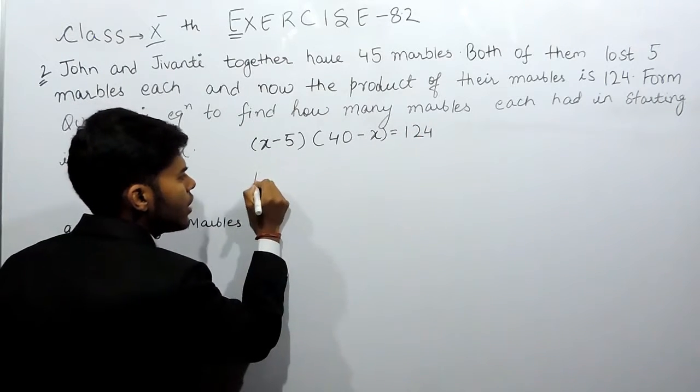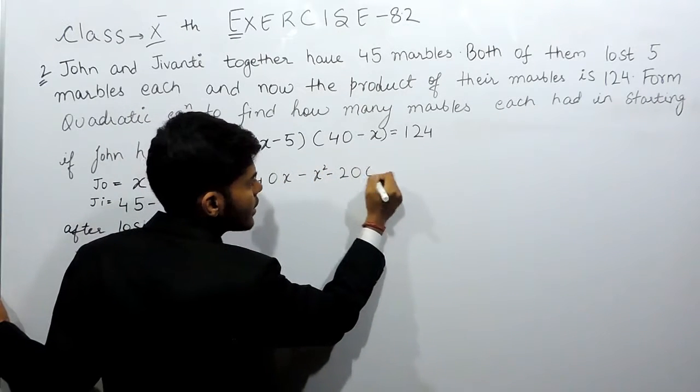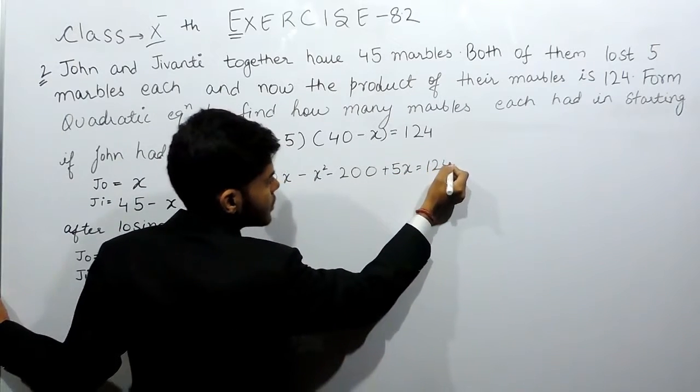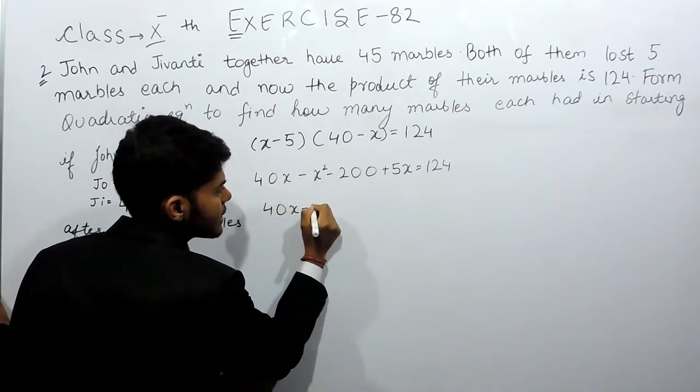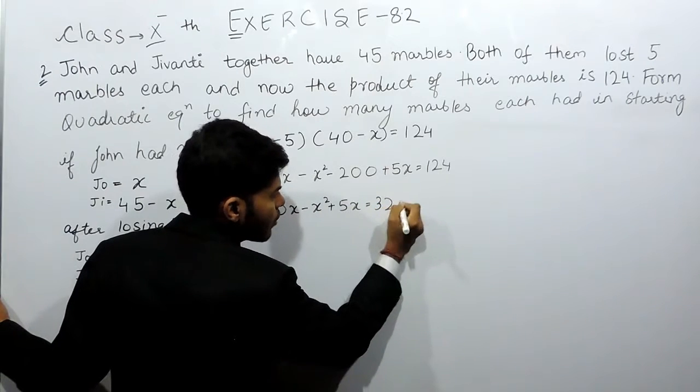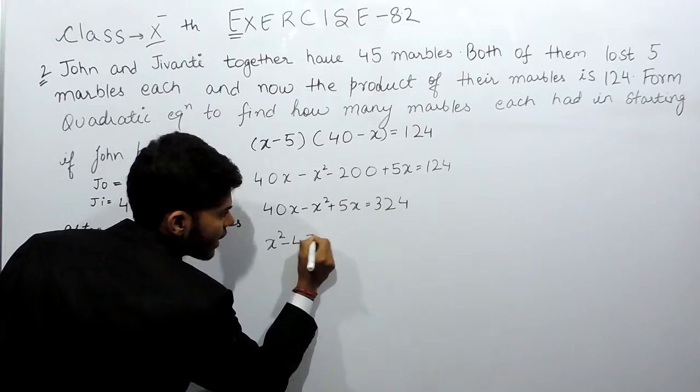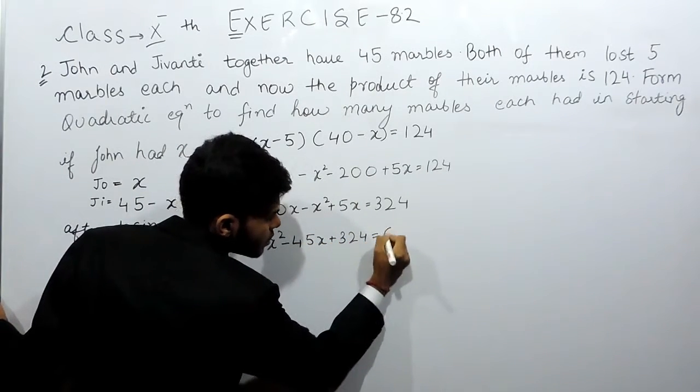We will form a quadratic equation. 40x minus x square minus 200 plus 5x equals to 124. 40x minus x square plus 5x equals to 324. x square minus 45x plus 324 equals to 0.